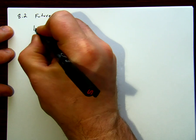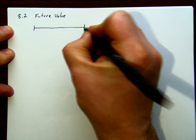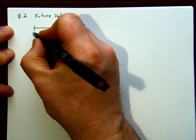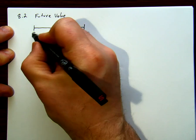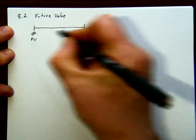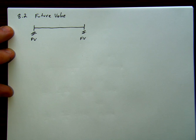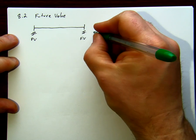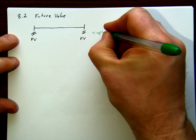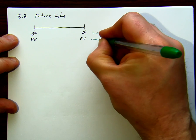So we have a timeline, just like we had before for simple interest, but instead of having P and S, we have the present value and the future value. This is our indication where this was simple interest, we now have compound interest.